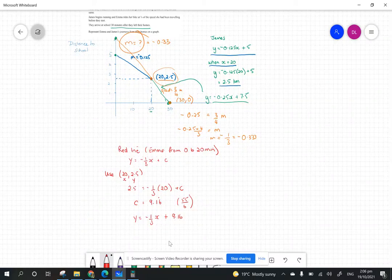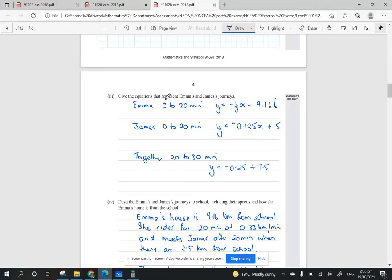This is the last part, the fourth part of question 1b. We'll look at the original question, which says give the equations that represent Emma and James' journey.